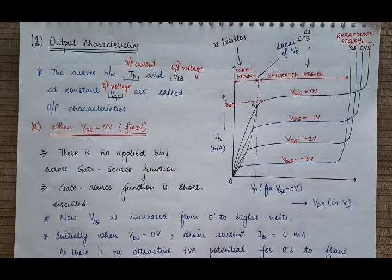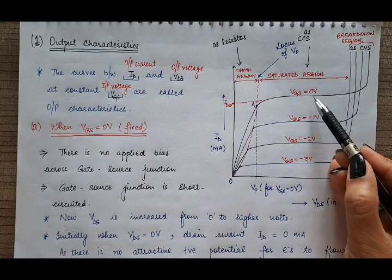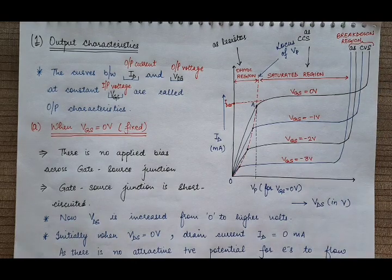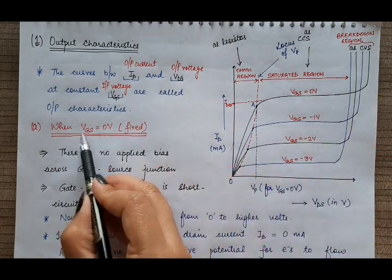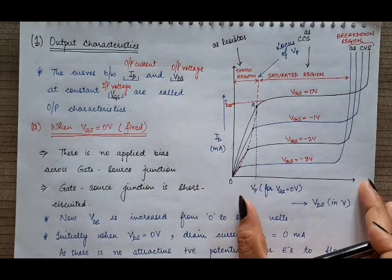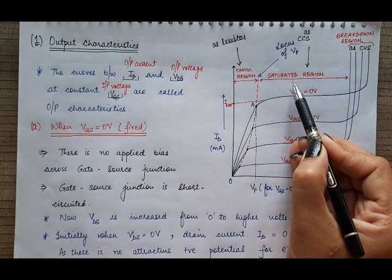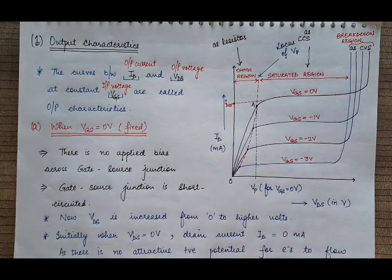Keeping VGS fixed, curves are obtained for different constant values of VGS: 0V, minus 1V, minus 2V, minus 3V and so on. First we will study the characteristic curve corresponding to VGS equal to 0V. The output characteristics region is divided into three regions: ohmic region, saturation region (also known as pinch-off region), and breakdown region. In all three regions, the junction field effect transistor functions differently.